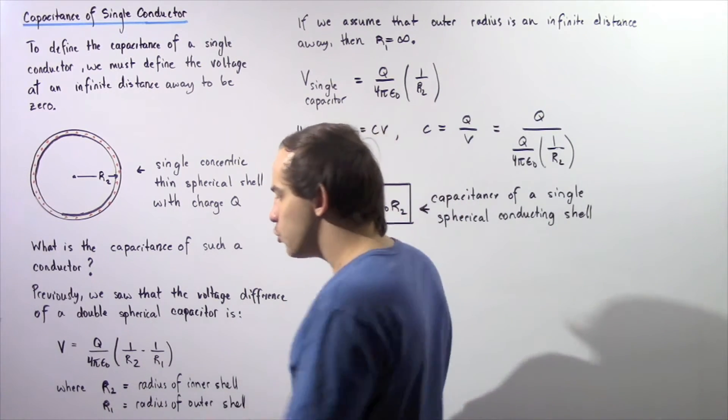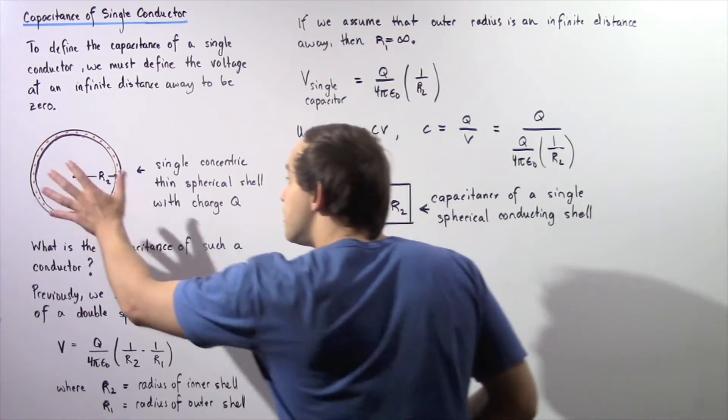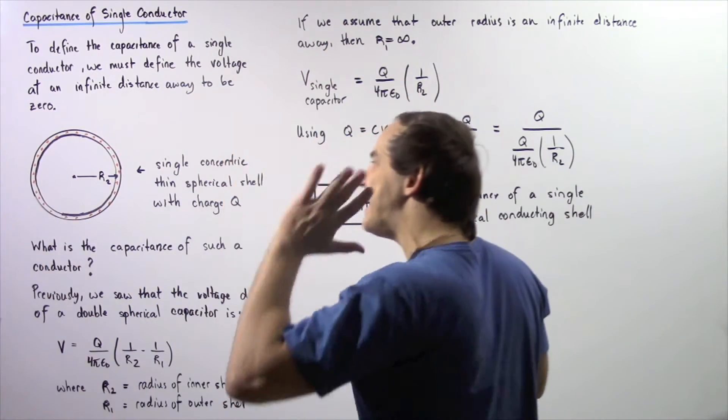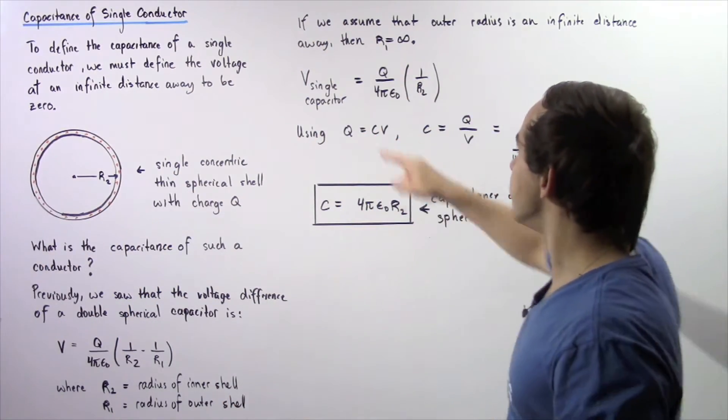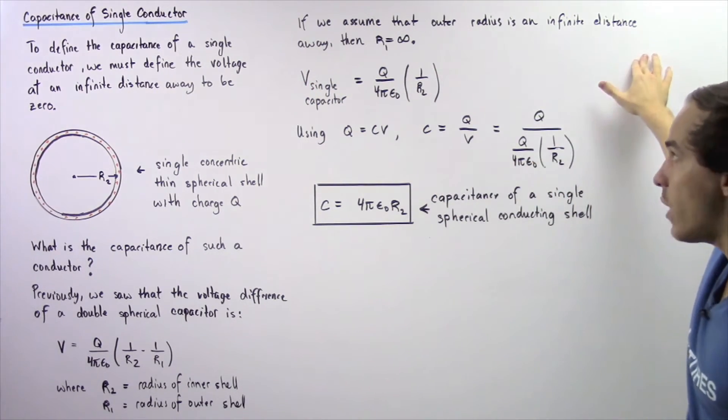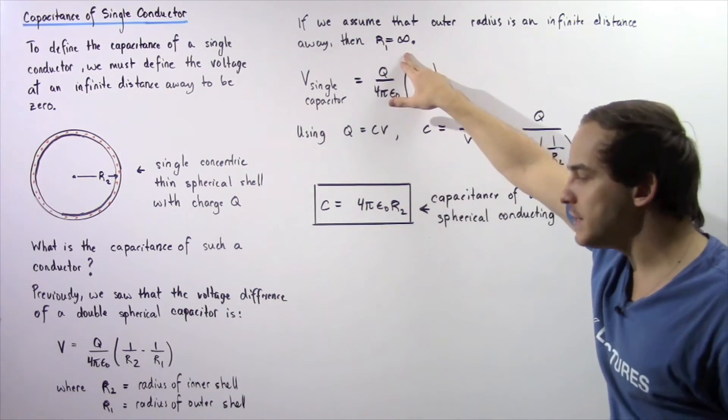Now we're going to use this result, but we're going to assume that this is our inner shell and the outer shell is an infinite distance far away. So if we assume that the outer radius is an infinite distance away, then that means R1 is equal to infinity.